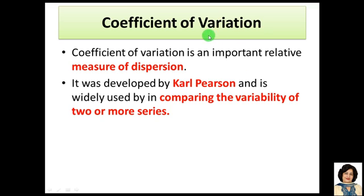Coefficient of Variation is an important relative measure of dispersion. It was developed by Carl Pearson and is widely used in comparing the variability of two or more series.